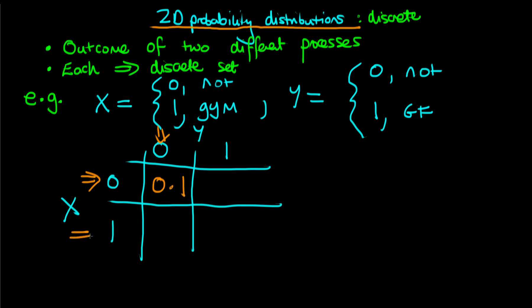Alternatively, if they do go to the gym and they don't have a girlfriend, then let's imagine that probability is 0.4. And if an individual doesn't go to the gym and does have a girlfriend, let's imagine that probability is 0.3. And then the remaining probability, when they go to the gym and have a girlfriend, is 0.2.